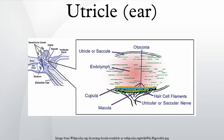The inertia of the otolithic membranes is especially important in detecting linear acceleration. Suppose you are sitting in a car at a stoplight and then begin to move. The otolithic membrane of the macula utriculi briefly lags behind the rest of the tissues, bends the stereocilia backward, and stimulates the cells. When you stop at the next light, the macula stops but the otolithic membrane keeps going for a moment, bending the stereocilia forward. The hair cells convert this pattern of stimulation to nerve signals, and the brain is thus advised of changes in your linear velocity.